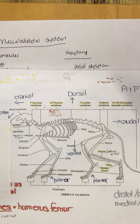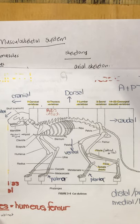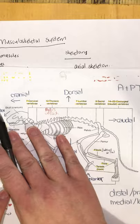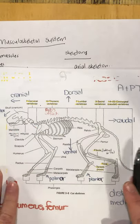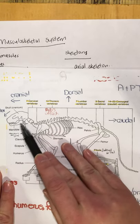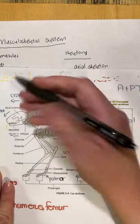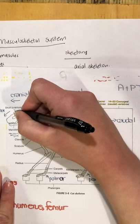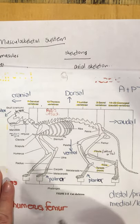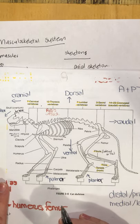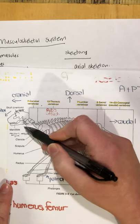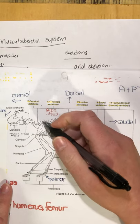I'm going to go through the axial skeleton first, cranial to caudal — most towards the head to most towards the tail. Our first bone is the skull. The orbit is basically the eye socket — it's where the eye goes. Then we have the mandible, which is the lower jaw, and that's the only movable bone in the skull.